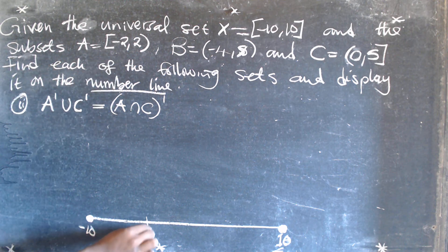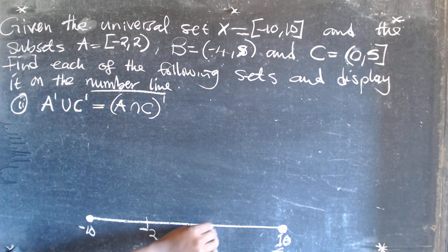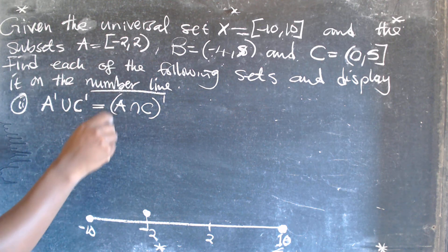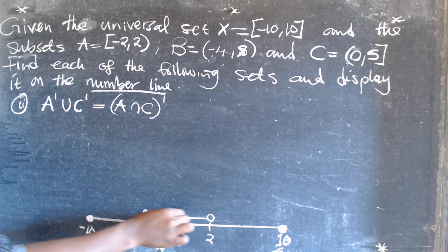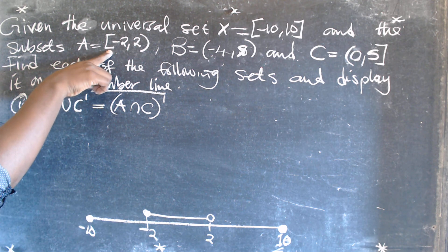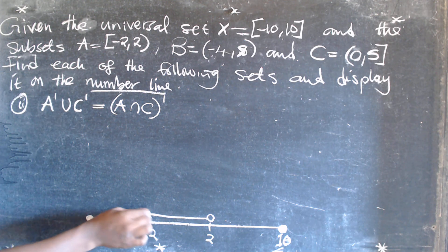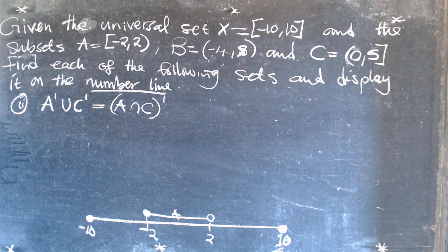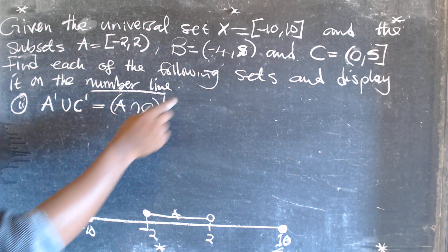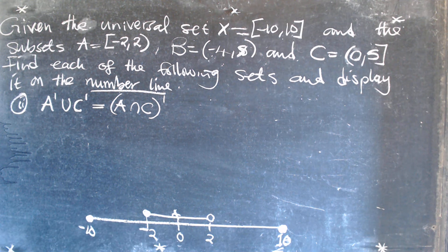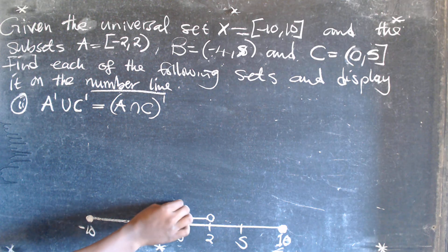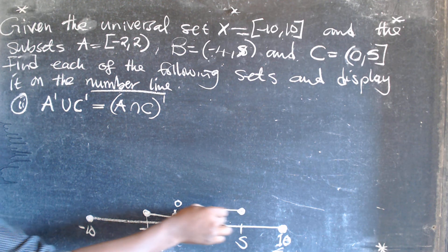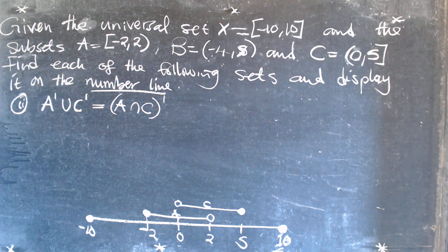Set A goes from negative 2 to 2. Negative 2 is part of the set so you shade it closed, and this 2 is not part of the set so you open it. This closed bracket means it's shaded, and that one is open — that is set A. Then set C goes from 0 to 5, where 0 is not part of the set and 5 is part of the set, so we connect these two. That is set C.